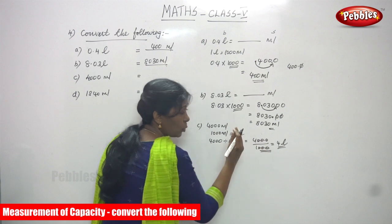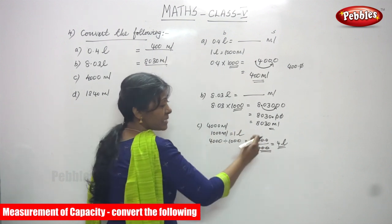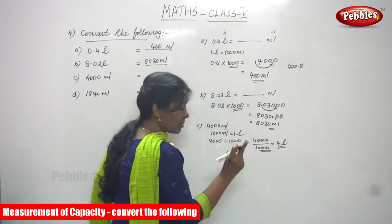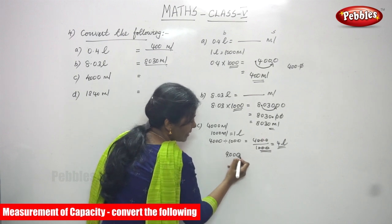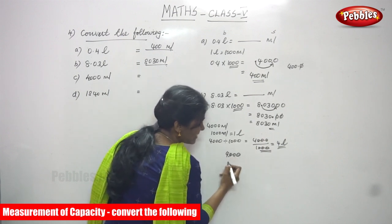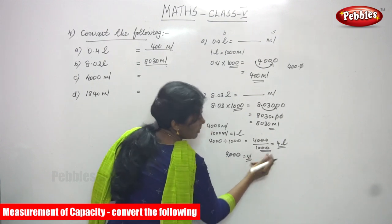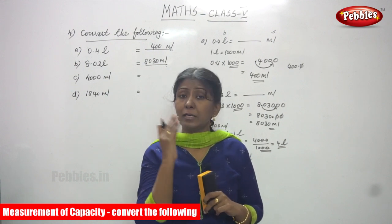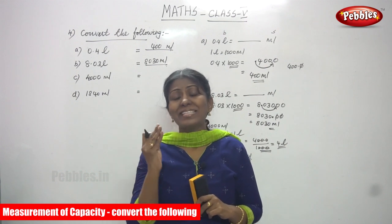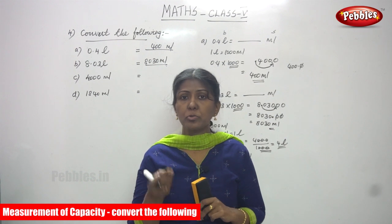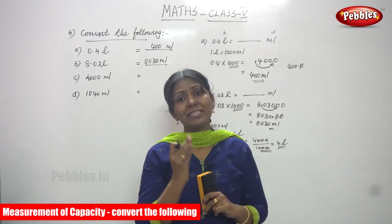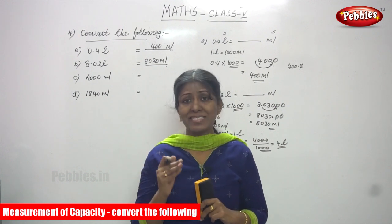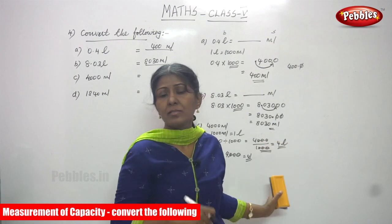Alternatively, when dividing by 1000 you move the decimal point three places to the left. In 4000 there are three zeros, so move three decimal places to the left and cancel the zeros after the point. You get 4 liters. You can use either method — whichever is convenient for you.